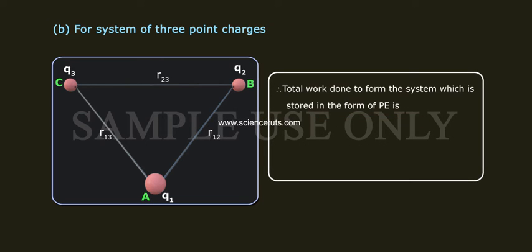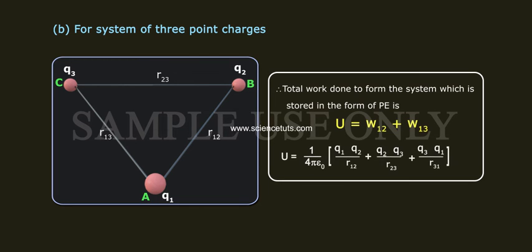Therefore, total work done to form the system which is stored in the form of potential energy is U equals 1 by 4 pi epsilon naught of Q1 Q2 by R12 plus Q2 Q3 by R23 plus Q3 Q1 by R31.